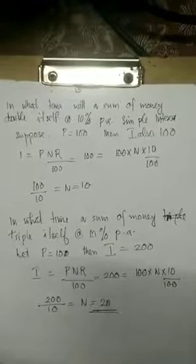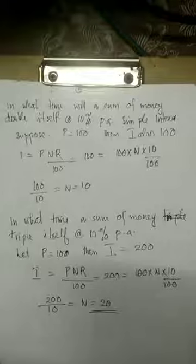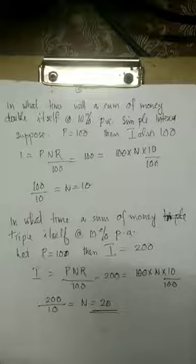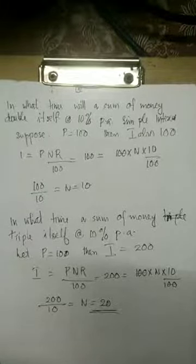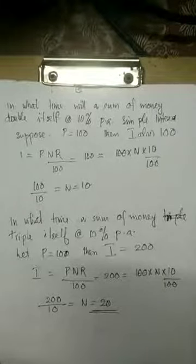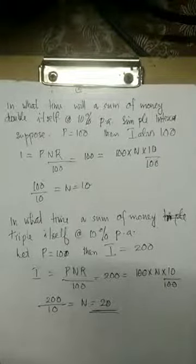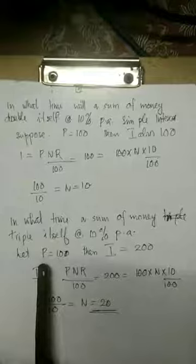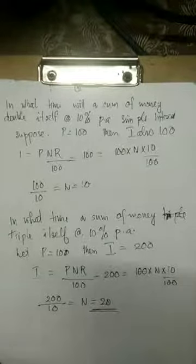In what time does a sum of money triple itself at 10% per annum? Let the invested principal be equal to 100.